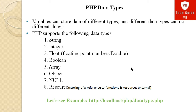The eight PHP data types are: string, integer, float, boolean, array, object, null, and resource. PHP data types are different from other programming languages, so it is very important to understand how PHP data types work.